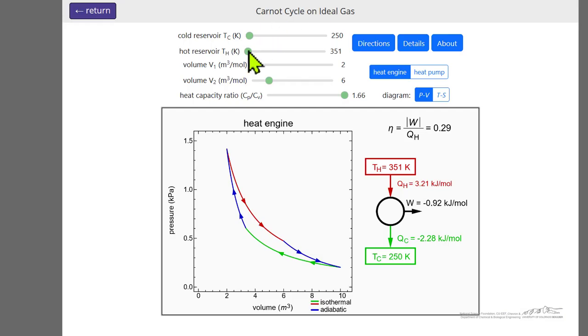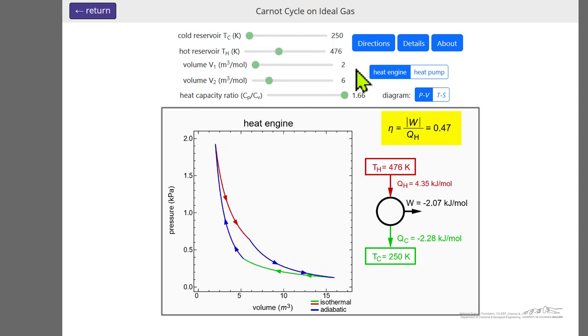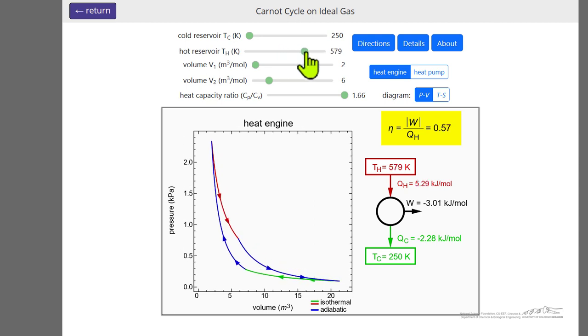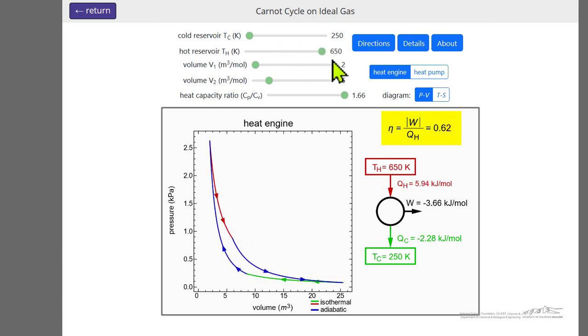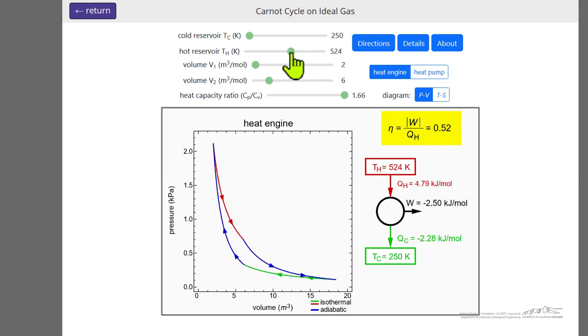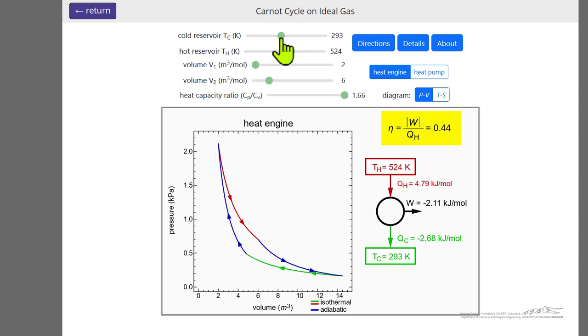So here for the simulation, as we, for example, raise the high temperature reservoir, you'll notice the efficiency is increasing, and we're converting a larger fraction of the heat added to work. If we raise the temperature of the low temperature reservoir, however, the efficiency decreases.